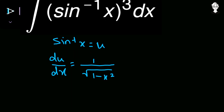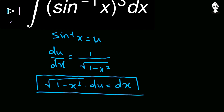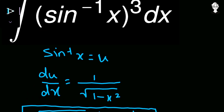From here, cross multiplication gives us that dx equals the square root of 1 minus x squared times du. Also, since sin inverse x equals u, by inverse trigonometry we know that x equals sin of u.